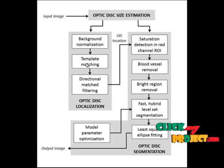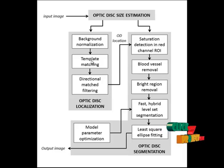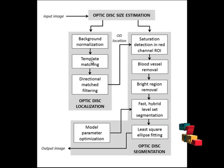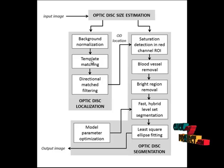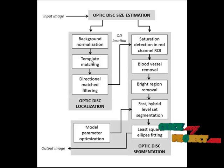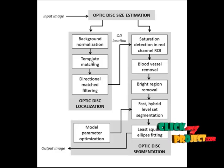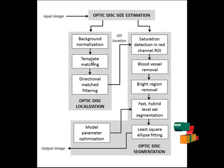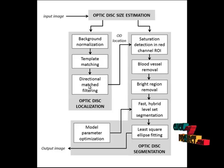To locate the OD candidates, a binary template where the disk is assigned a value of 1 and the background is assigned a value of 0 is used. The radius of the white circle in the template is the estimated OD radius. Since some regions such as those composed of exudates, PPA, and myelinated nerve fibers may also give high correlations in template matching, we remove false positives and locate the OD center by using one of the most prominent characteristics of the OD — the main vessel arcs originating from the OD center — provided by using directional matched filtering. Thus we find the OD localization.